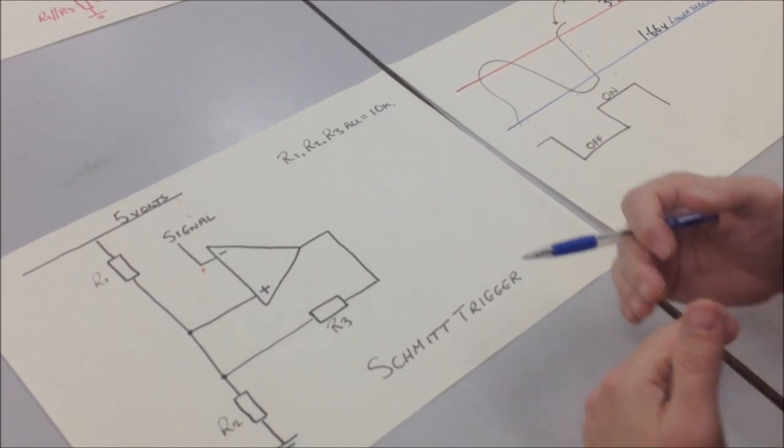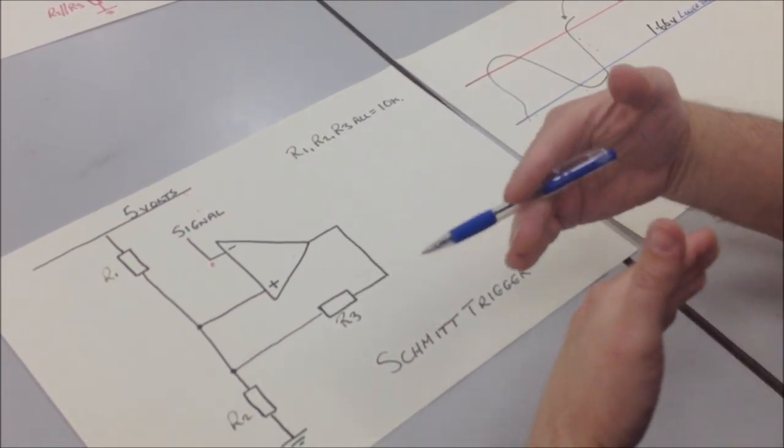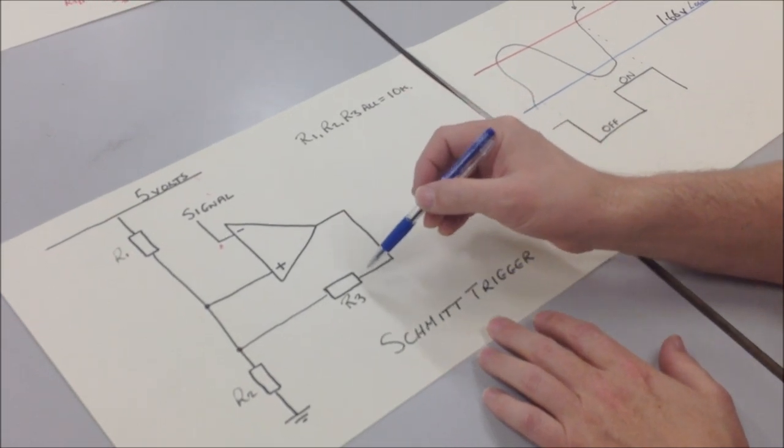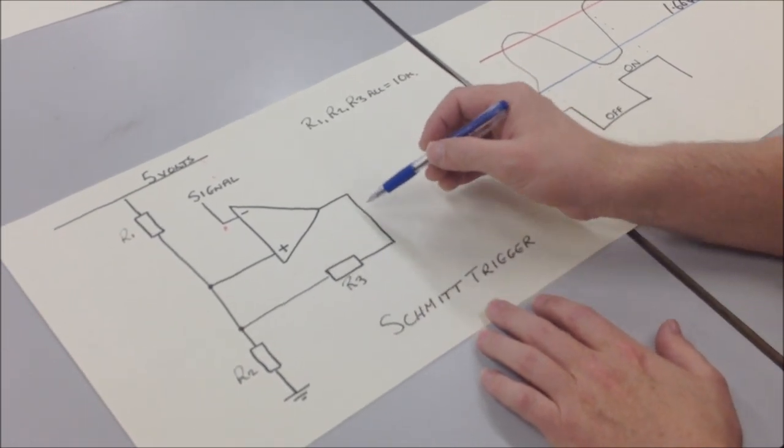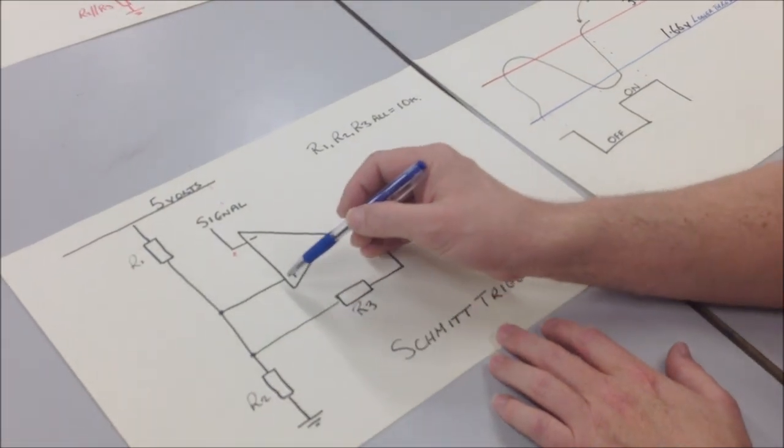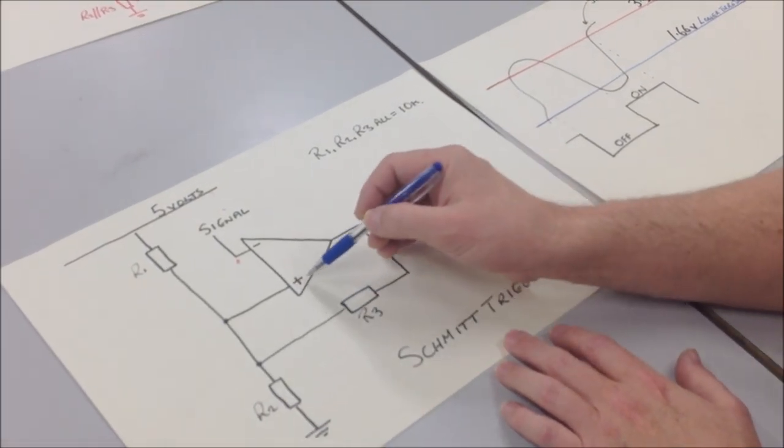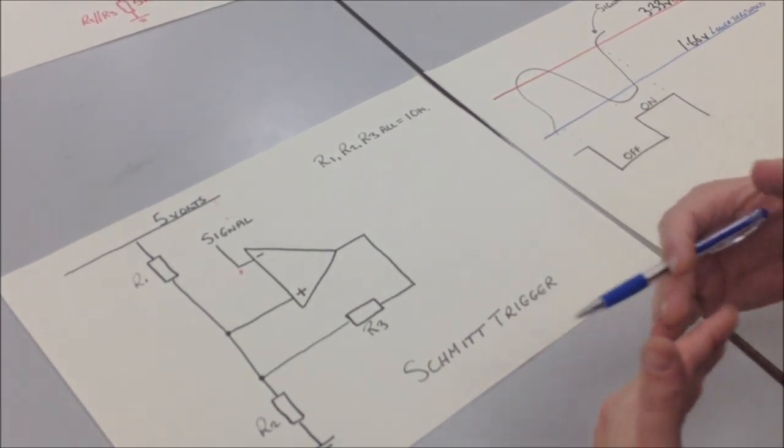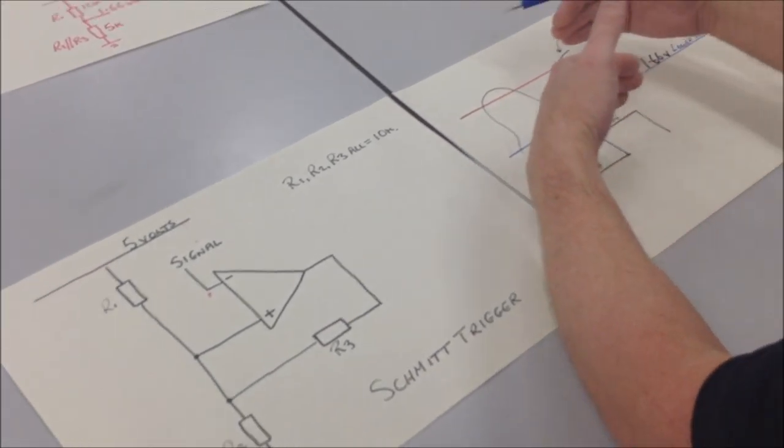What would happen then for a Schmitt Trigger, why it's called a Schmitt Trigger, is it has a feedback path where we use another resistor fed back from the output to the non-inverting input there, the one that's got the positive sign. And what that allows us to do is to have two thresholds.